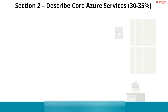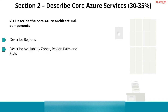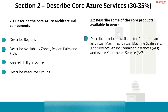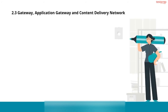Section 2 — Describe Core Azure Services, comprising 30% to 35%. Number 1: describe the core Azure architectural components, including regions, availability zones, region pairs and SLAs, app reliability in Azure, and resource groups. Number 2: describe core products available in Azure, including compute products such as virtual machines, virtual machine scale sets, app services, Azure container instances, and Azure Kubernetes Service. Also describe products available for networking, including gateway, application gateway, and content delivery network.